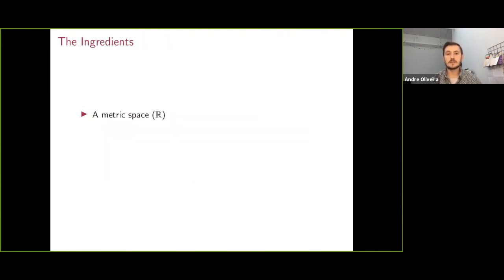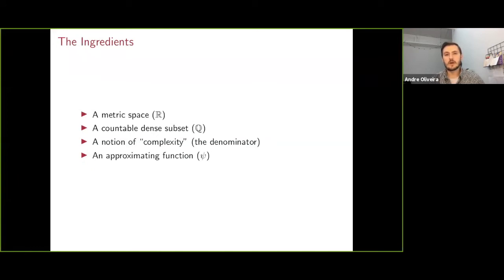So the common ingredients to all of these are that we're looking at the metric space R, we have a countable dense subset, the rationals or a subset of them, we have a notion of complexity which is often the denominator of the rational, and we have this approximating function.